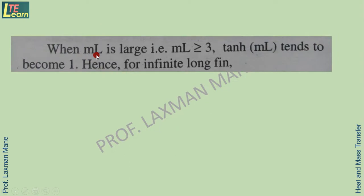Now when mL is large, its value greater than or equal to 3, tanh(mL) tends to become 1. Hence for infinite long fin, the formula for effectiveness can be written as square root of k·P upon h·A. Here k is thermal conductivity and h is the convective heat transfer coefficient.